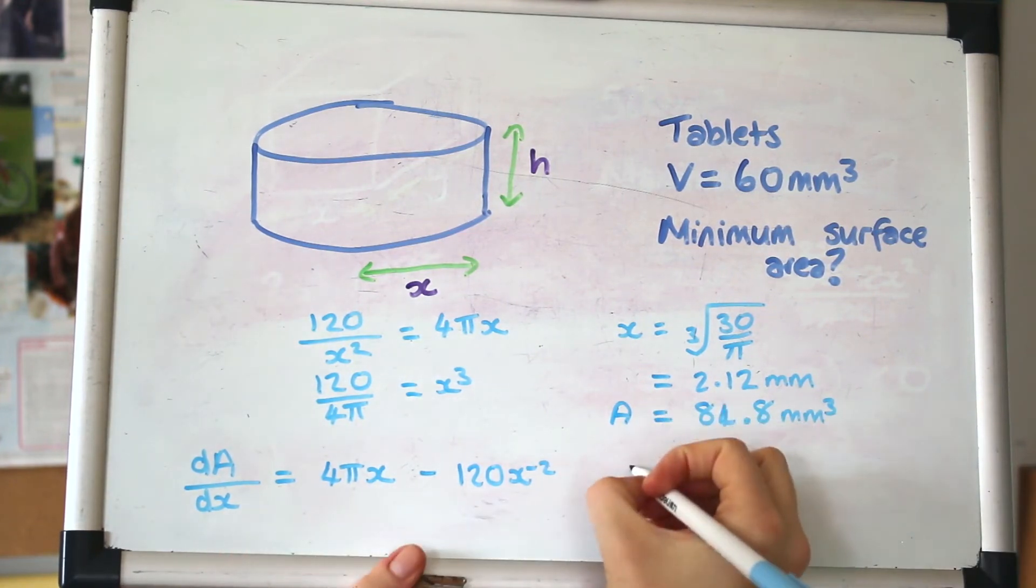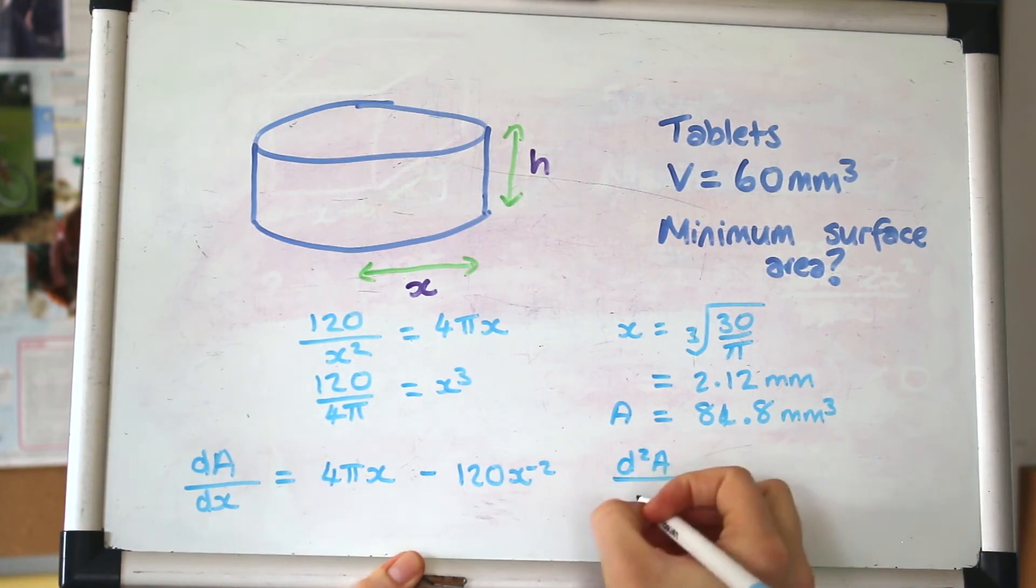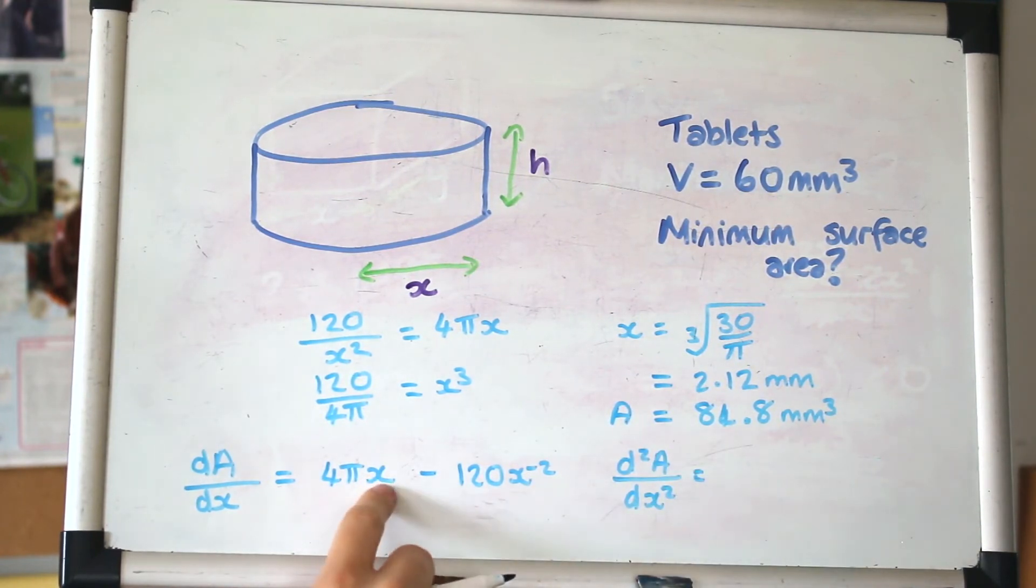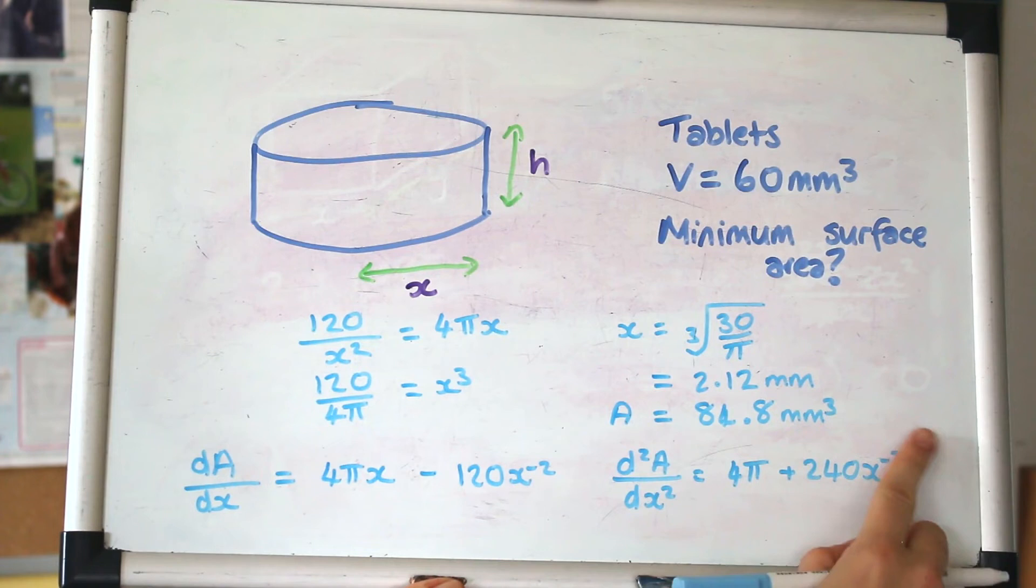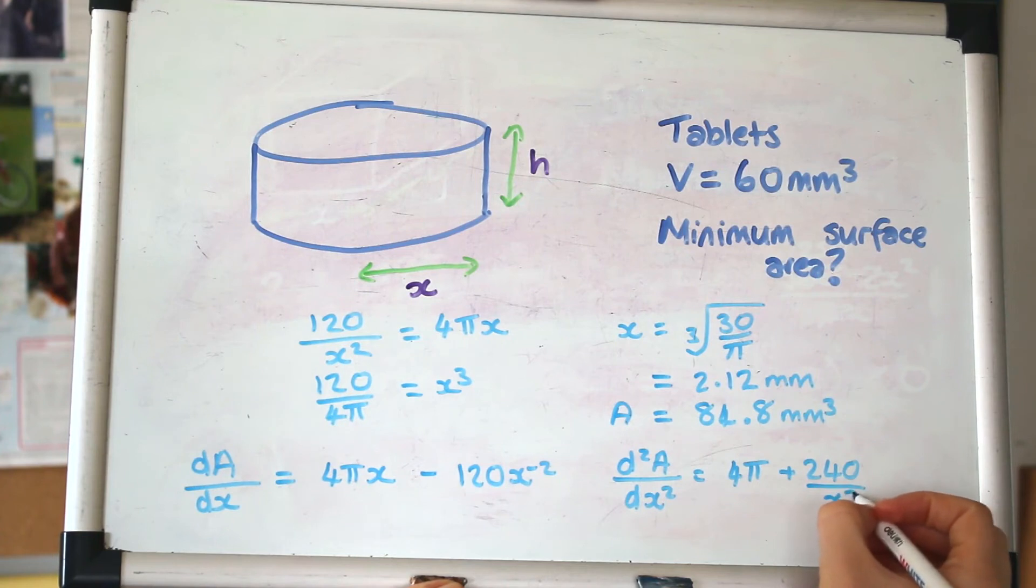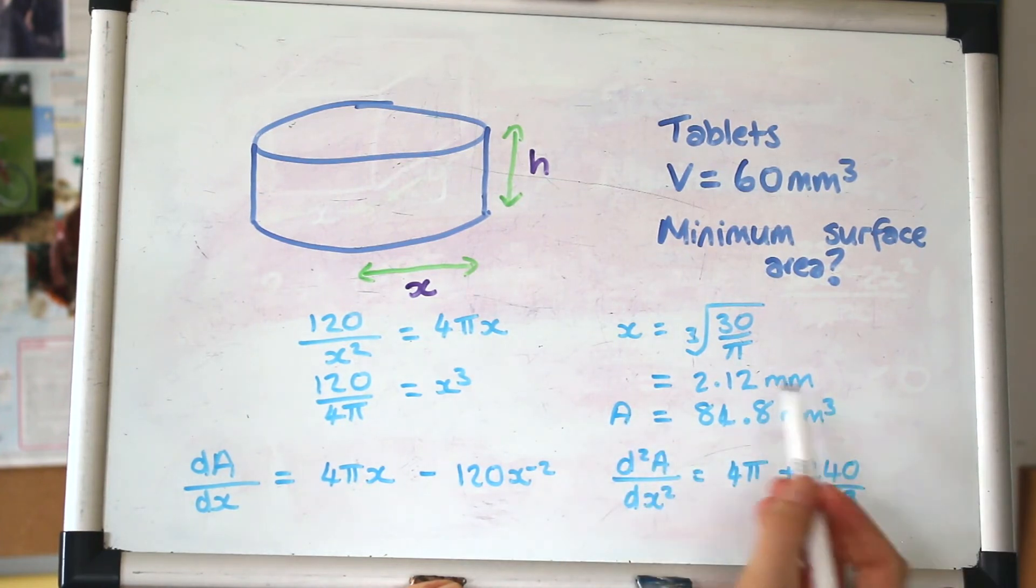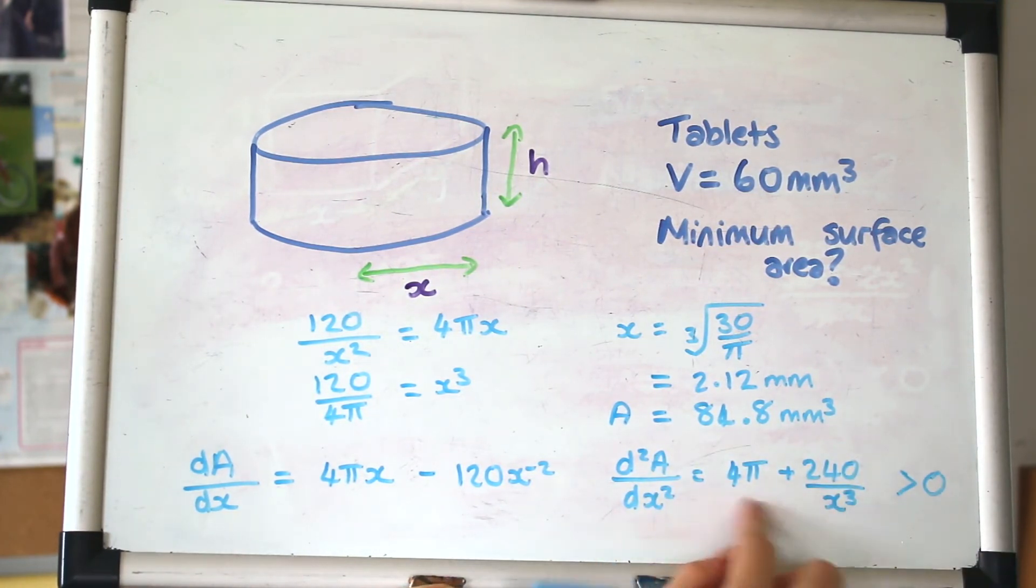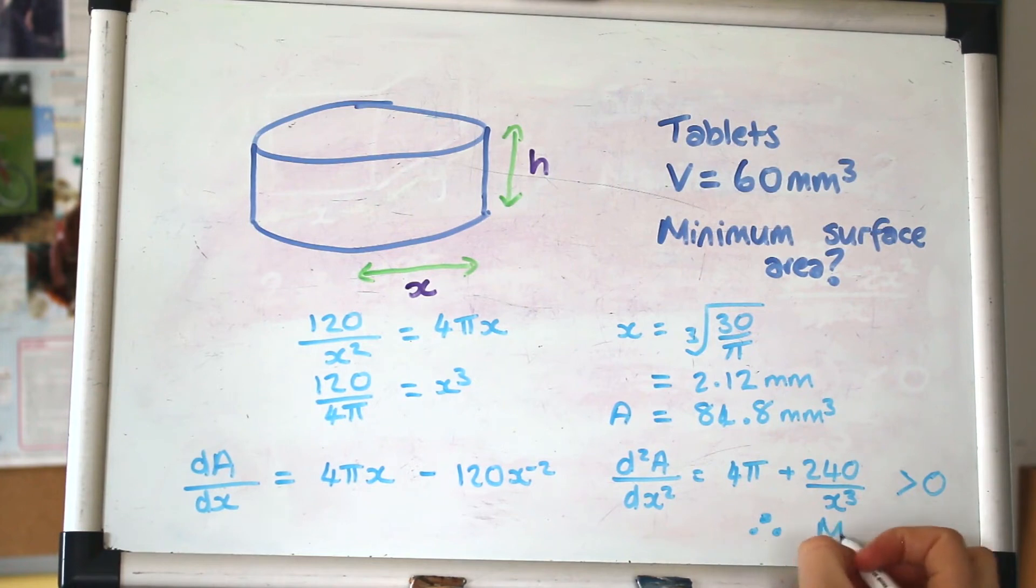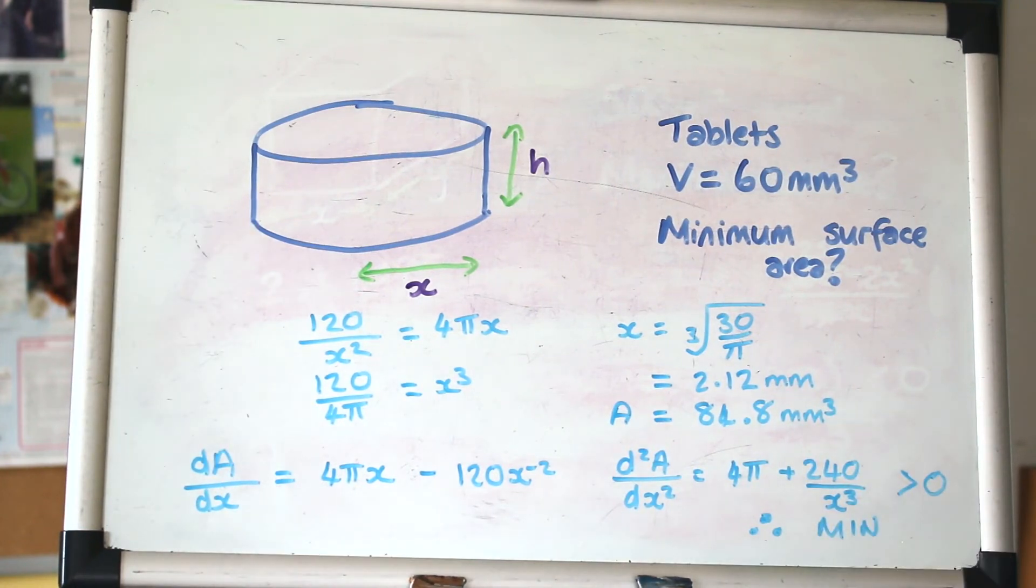Differentiating again, treating π as a number, we get d²A/dx² = 4π + 240x⁻³. This is a positive expression, and when you put in a positive value, you'll get a positive answer. If you've got more space than me, it's good to actually do that to show you're substituting that in to get a positive answer. It's positive, so it's definitely a minimum. Well done if you're getting this.